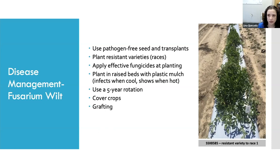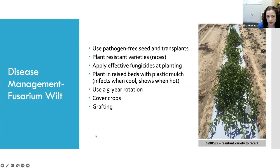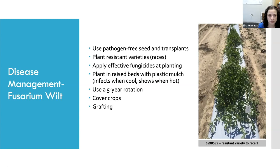There are some resistant varieties available because this pathogen has races — race one, two, and a debated race three — and we have some resistant watermelons. We can also apply effective fungicide at planting. We don't have a lot of effective active ingredients, but the ones we have are very good if used as a preventative application right at or shortly after planting. Planting in raised beds with plastic mulch can also help because it raises soil temperature, and the pathogen prefers cooler soil temperatures. People also recommend a five-year rotation to try to keep inoculum levels down.